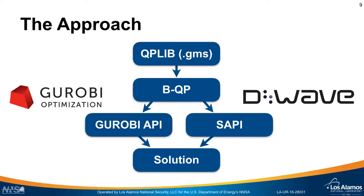This is the basic approach. The QPLib is stored in .gams files. We load those into our own native data structures for binary quadratic programs, and then we can send them off to Gurobi through Gurobi's solver API, or off to the D-Wave hardware via the SAPI API. Both of those output solutions in the exact same format so we can easily compare them on a common basis.